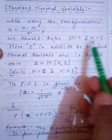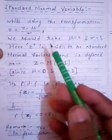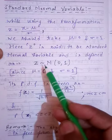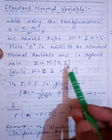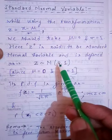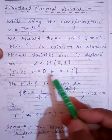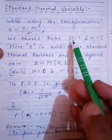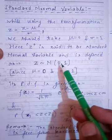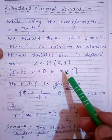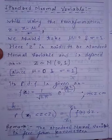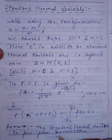We say z is a standard normal variable if we take the transformation z = (x - mu)/sigma and mu = 0, sigma = 1. So z follows normal distribution with parameters mu = 0 and sigma squared = 1, i.e., variance = 1. This situation — when mu is 0 and sigma is 1 — defines the standard normal variable z.